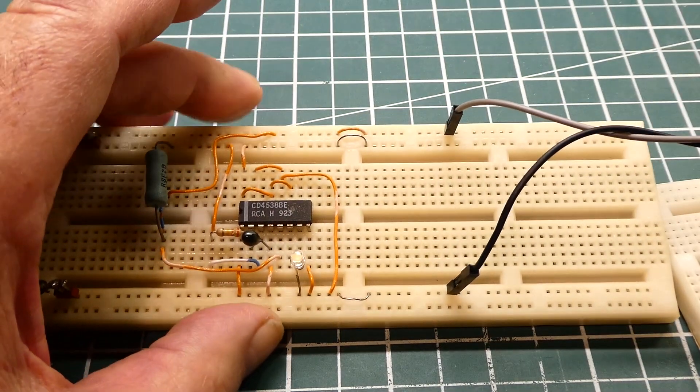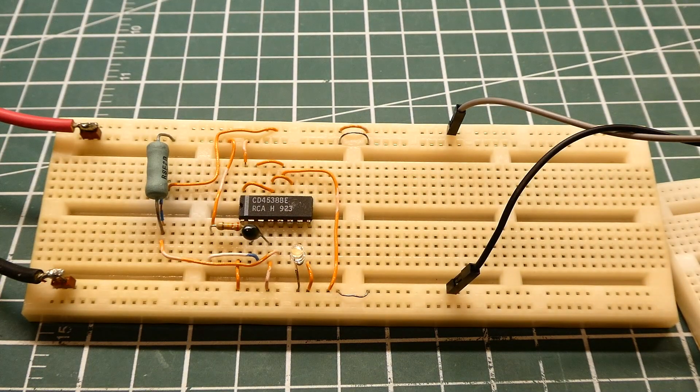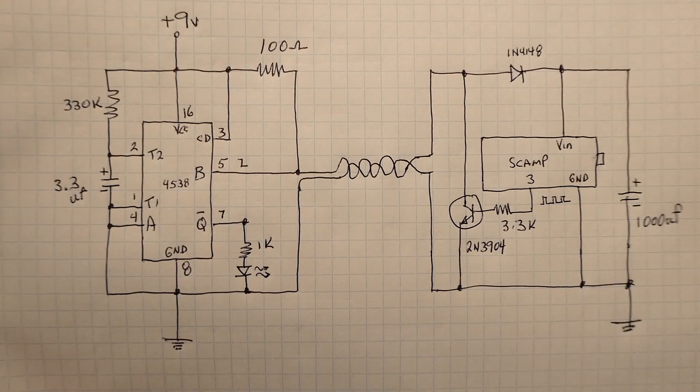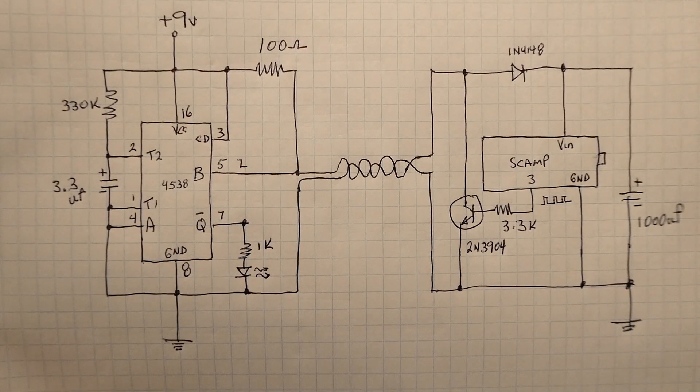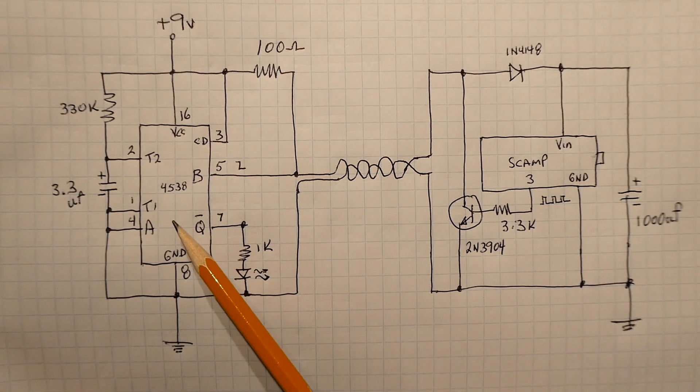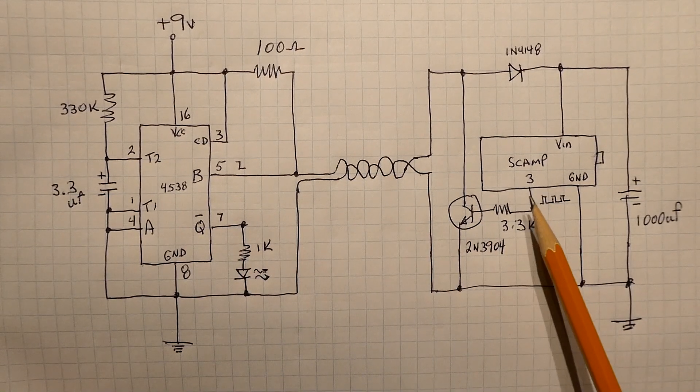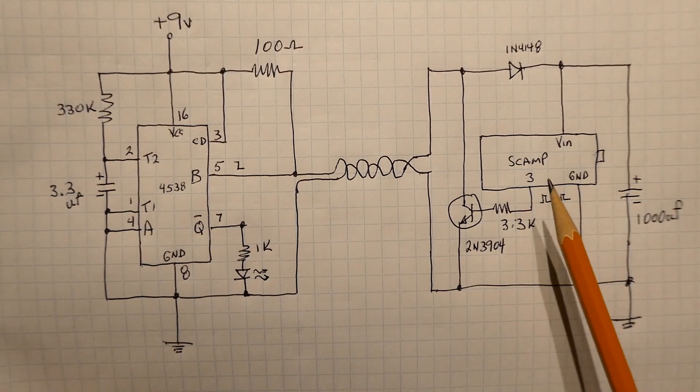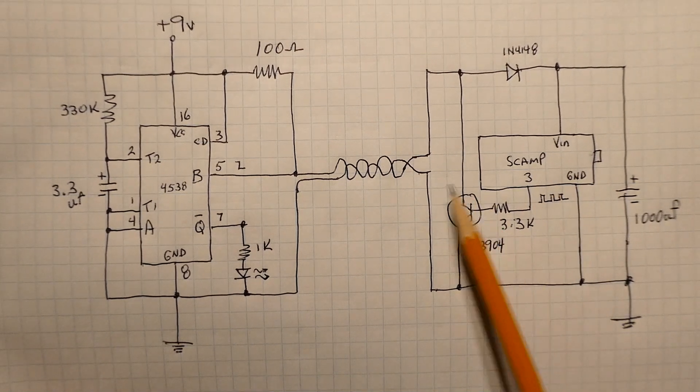Okay, here's the schematic diagram of the circuit that I built on my breadboard. Now the circuit on the left is the power supply and alarm decoder. Circuit on the right is a SCAMP board with the microcontroller and a temperature sensor, and they're connected together with a twisted pair.